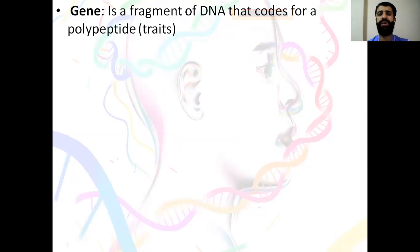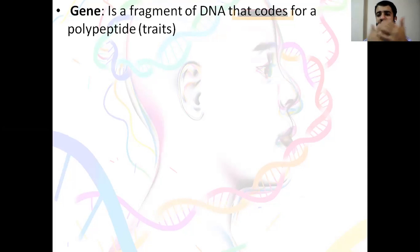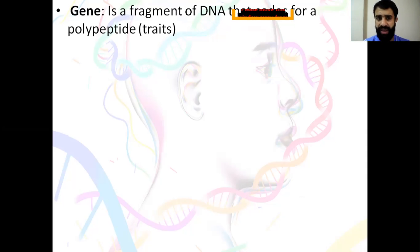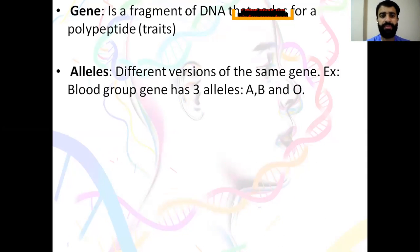For example, the gene for hair color, the gene for skin color, the gene for the level of thinking, the gene for blood groups — all of them are part of DNA. They are segments of DNA and they can code for a specific trait.